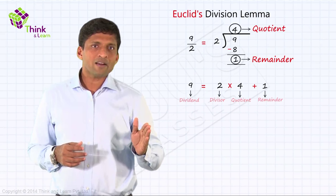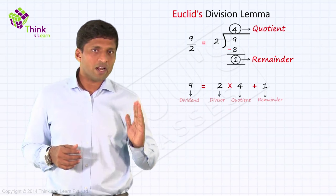Now in this case, 9 is the dividend, 2 is the divisor, 4 was the quotient, and 1 is the remainder.